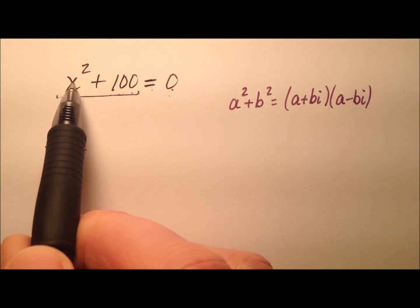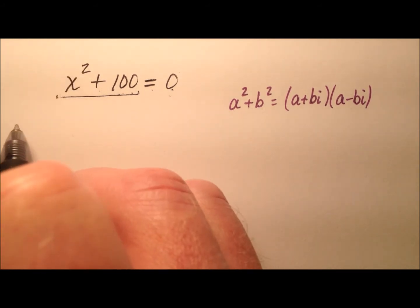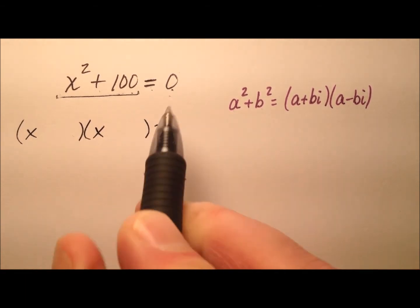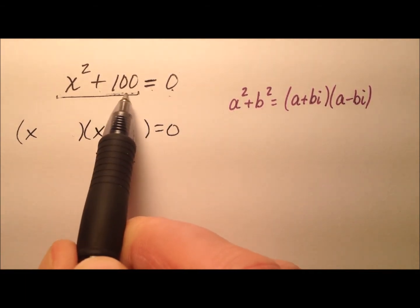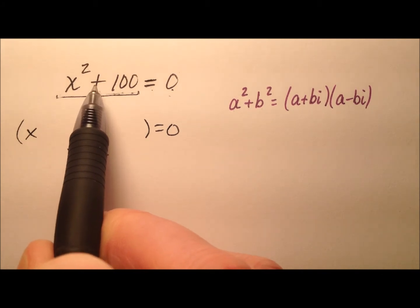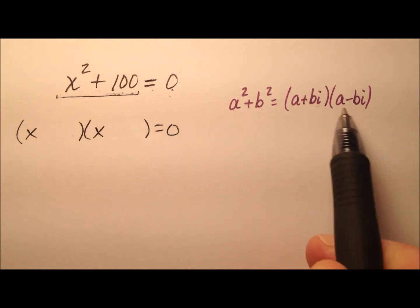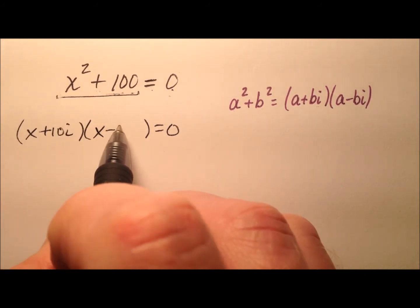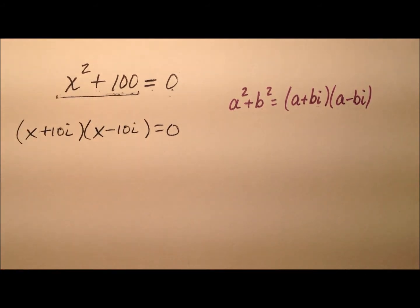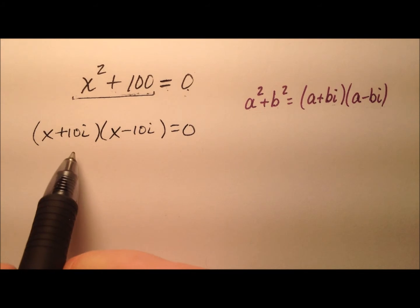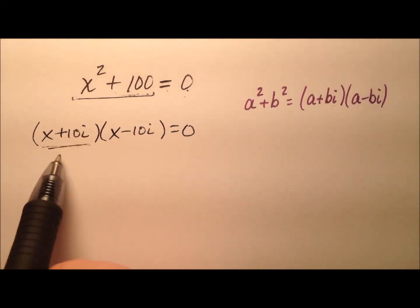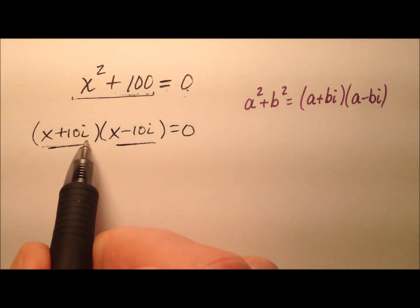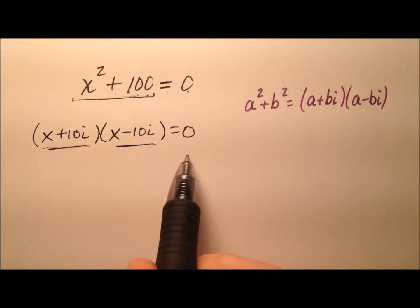The square root of x squared is x, and the square root of 100 is 10. But because it's the sum of two squares, we'll have to add an i. So it'll be plus 10i and minus 10i. So we have two factors here: x plus 10i and x minus 10i.